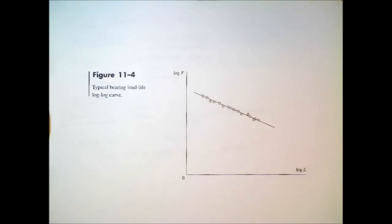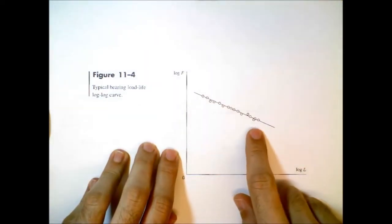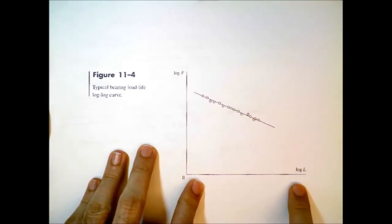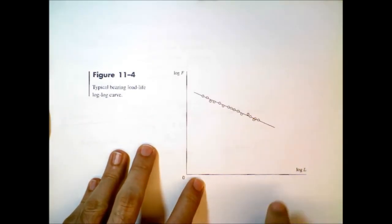Figure 11-4 from your textbook shows an important relationship between the life of bearings and the force applied to bearings. There's a very clear relationship here. These circles represent empirical data.